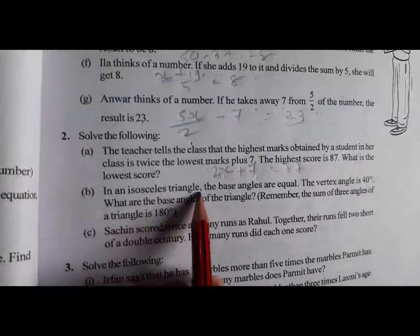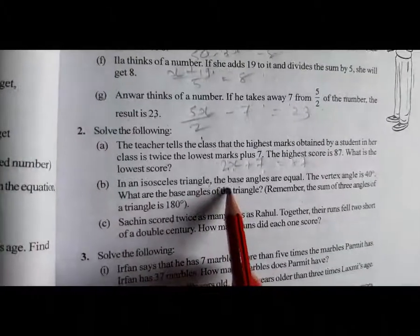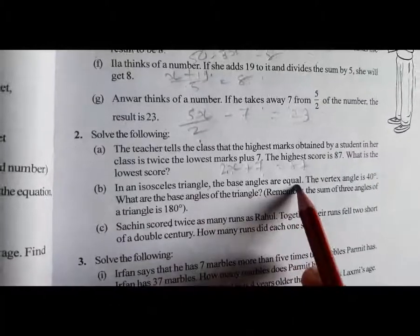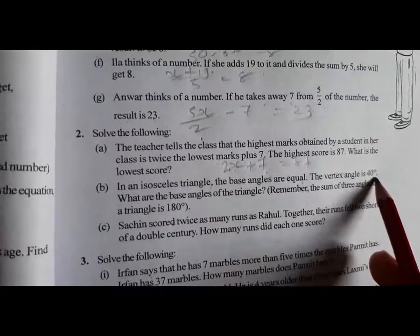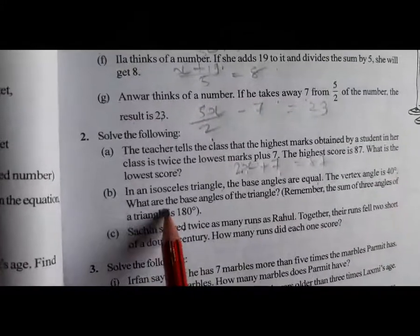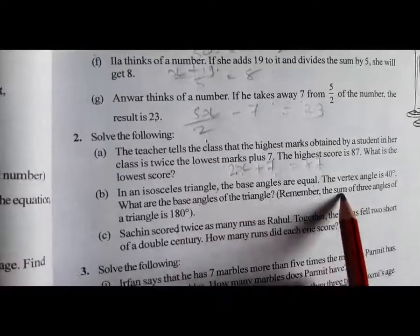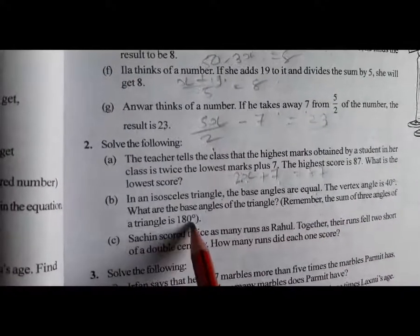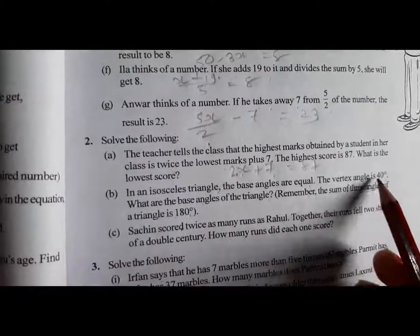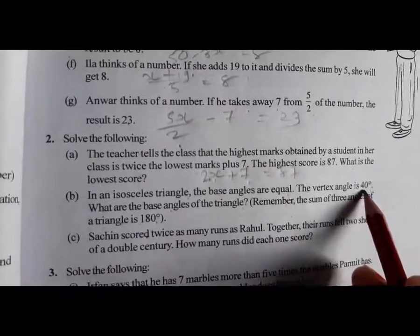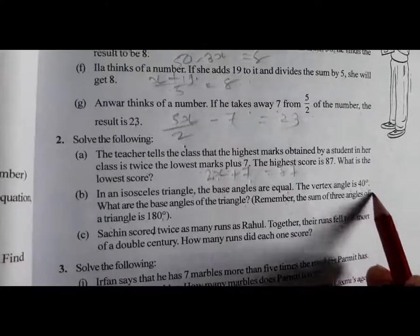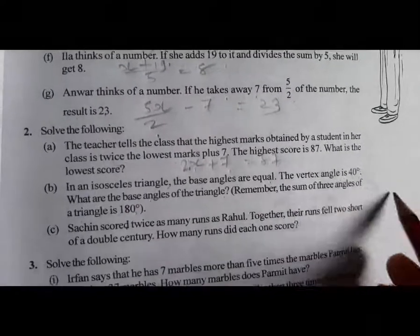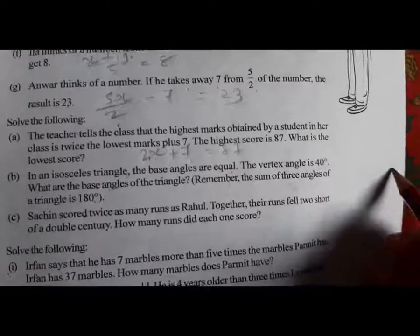In an isosceles triangle — which has two equal sides — the base angles are equal. The vertex angle is 40°. What are the base angles of the triangle? Remember, the sum of 3 angles of a triangle is 180°. The vertex angle is given as 40°, so we take the two other equal angles as X each.